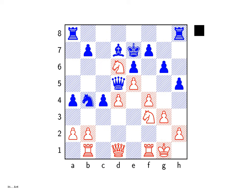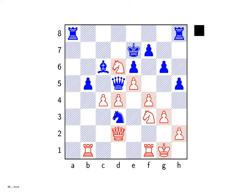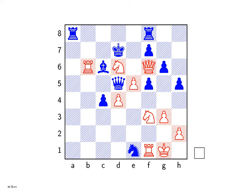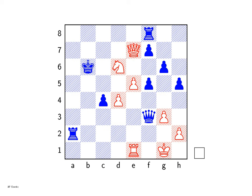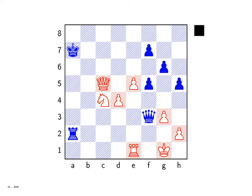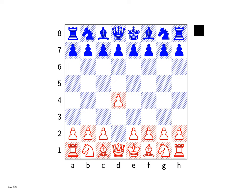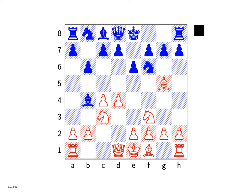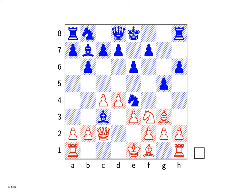Hawking introduces the Big Bang theory as the prevailing explanation for the universe's expansion. According to this theory, the universe began from an extremely hot, dense state approximately 13.8 billion years ago, starting as a singularity – a point of infinite density and temperature – and has been cooling and expanding over time. The chapter discusses the discovery of Cosmic Microwave Background radiation in 1965 by Arno Penzias and Robert Wilson, a faint uniform radiation permeating the universe. This radiation is a remnant of the early hot phase of the universe and supports the idea that the universe originated from a hot, dense state.